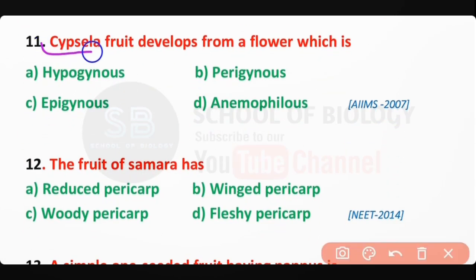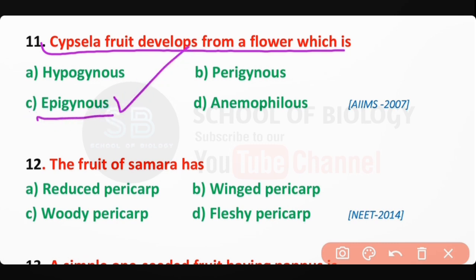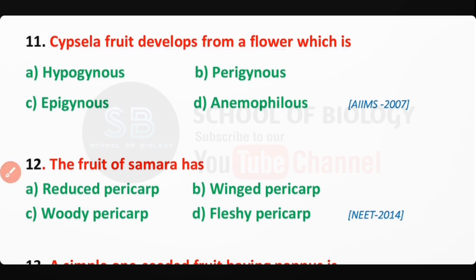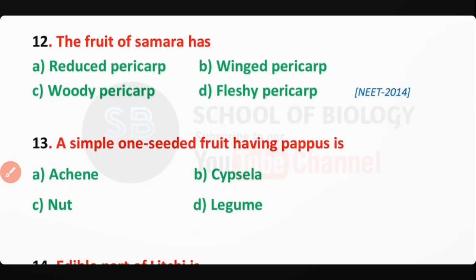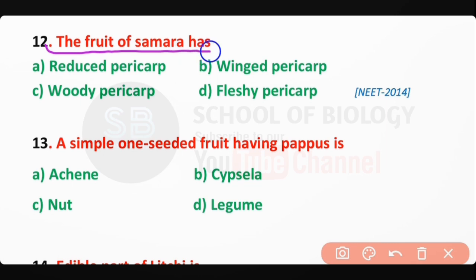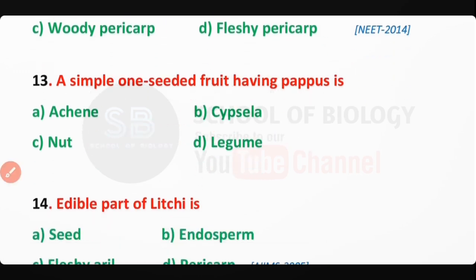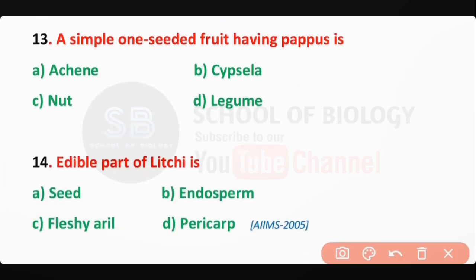Q11: Capsule fruit develops from a flower which is epigynous in nature — correct answer is option C. Q12: The fruit of samara has a winged pericarp — correct answer is option B. Q13: A simple one-seeded fruit having a pappus is known as an achene — correct answer is option A.